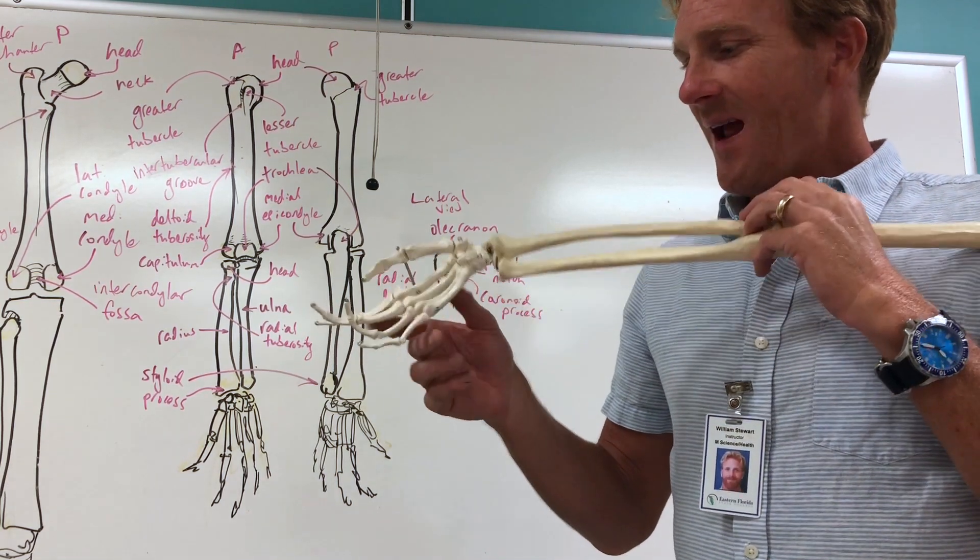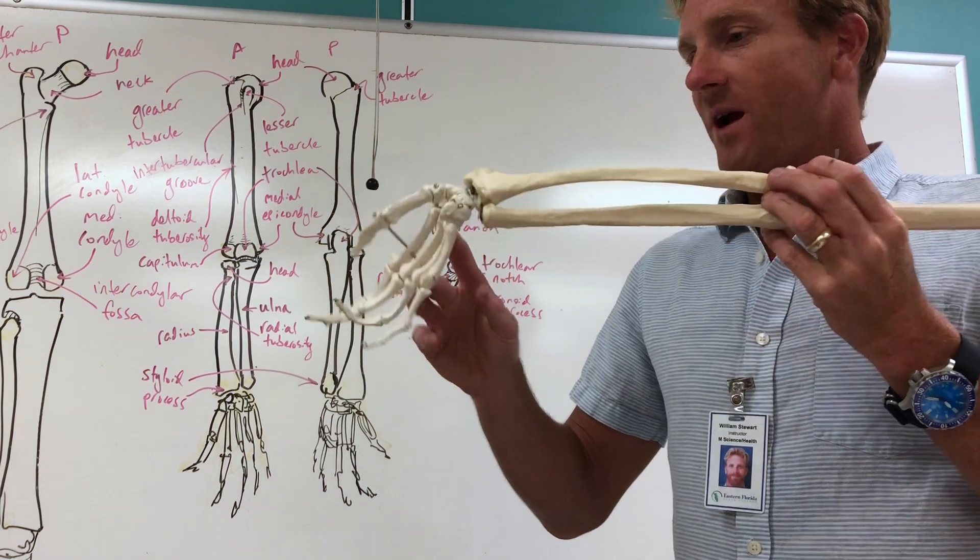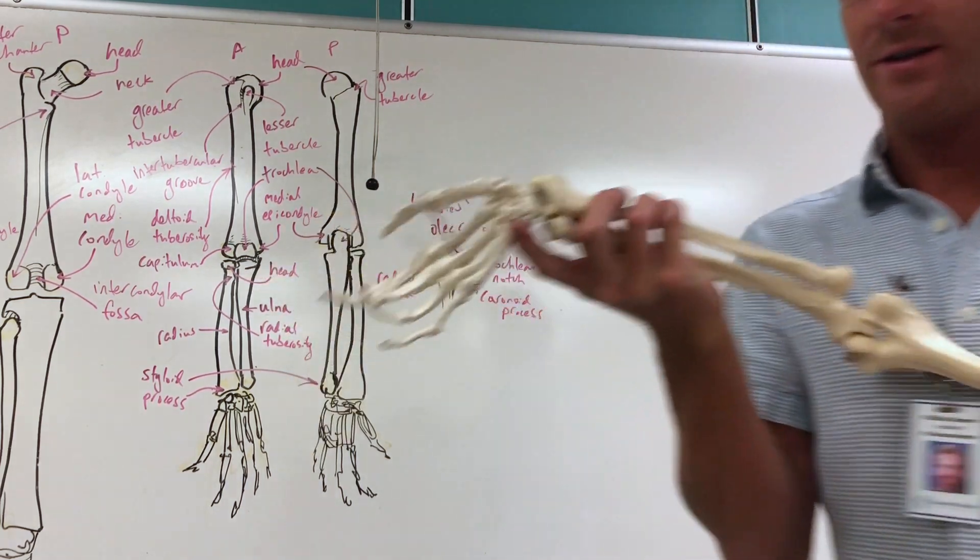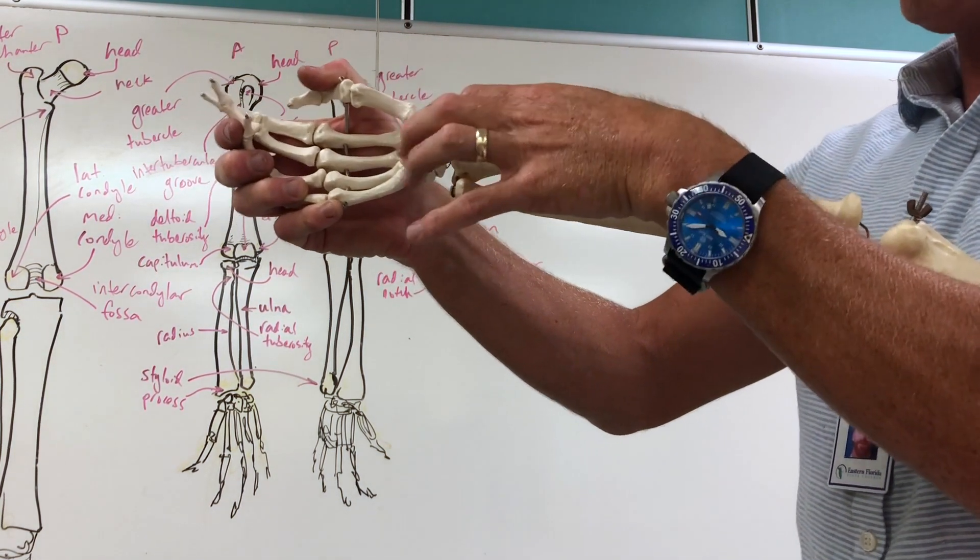There's a series of eight carpal bones that make up the wrist. They come in rows of four. This is gonna be a lot, I don't know how well this is gonna work out, but you can see we're gonna start right here with the carpal bone.